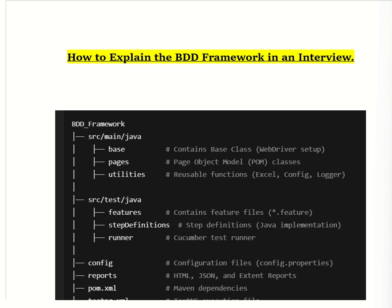The key components of the BDD framework are: feature file, step definition, test runner, hooks, reports, and the Page Object Model. Now we will look at each component of the BDD framework one by one.